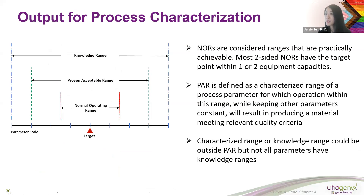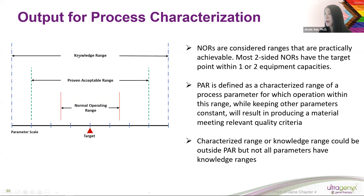The output of process characterization is used to find the proven acceptance range (PAR)—the range within which the process operates acceptably. The normal operating range is what we control in commercial or GMP manufacturing; it should fall within the PAR. The knowledge range may also include edge-of-failure data. The PAR and normal operating range are required by FDA, though edge-of-failure data is not specifically required.